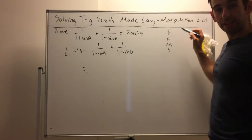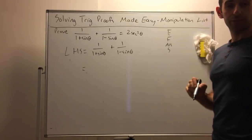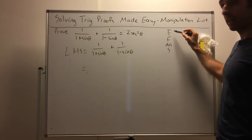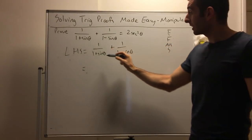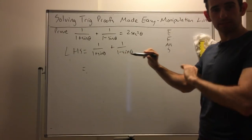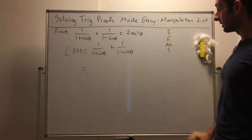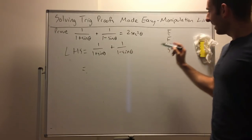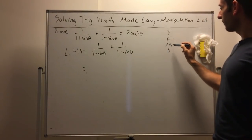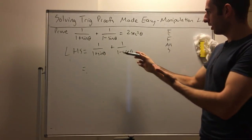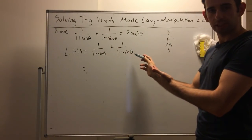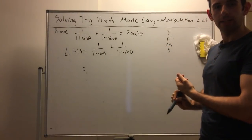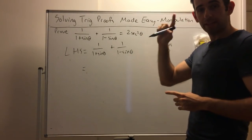When doing proof questions we work with one side. Go through the list and find the first or simplest thing you can do. Can I expand? There are no brackets, so no. Factorize? No common factors. Add or subtract fractions? Well, I've got two fractions I can add, so I can do that one straight away.